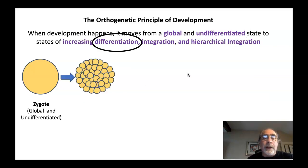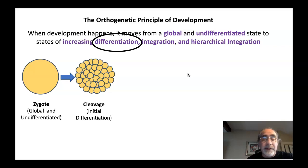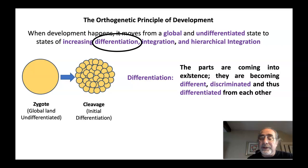Now let's move to 'differentiated.' When the cells undergo cleavage, we have our initial differentiation. Where there was once one cell, now we have many different cells. They're not the same cell, even though they are the same type. They are identical in their integrity, but there are many different cells where once there was one — that's differentiation. The parts are beginning to come into existence; they're beginning to become different. We can discriminate one cell from the other, even though they are the same type.